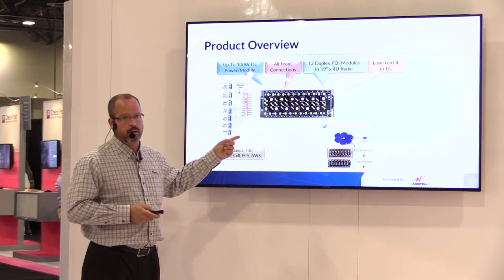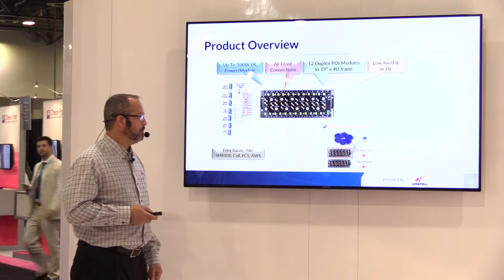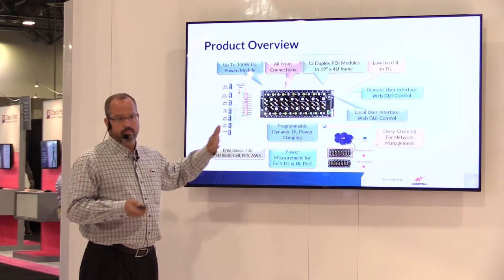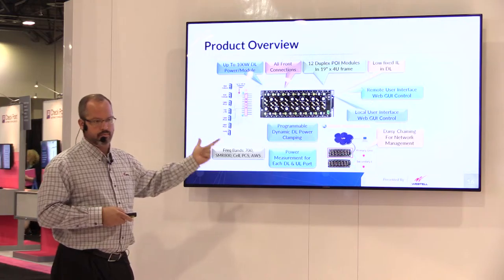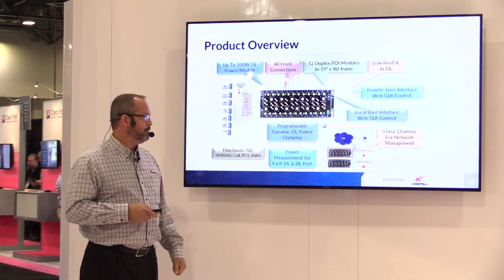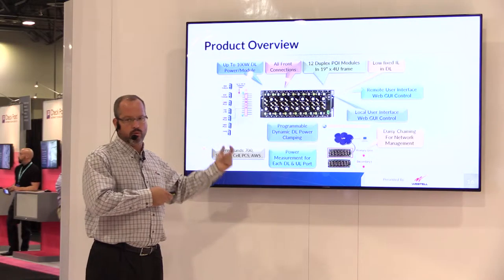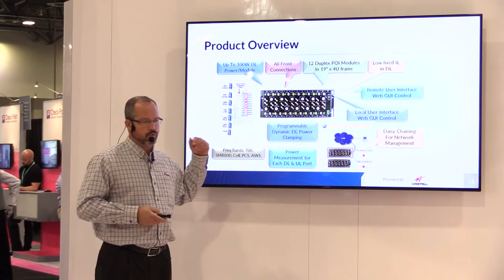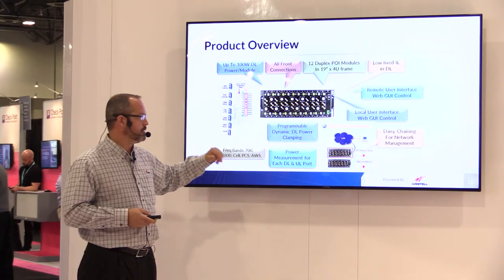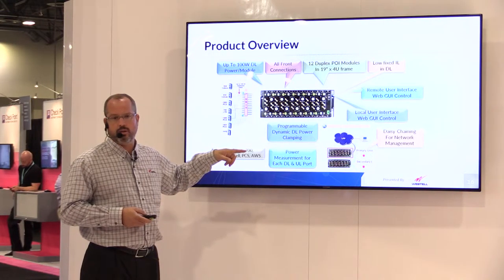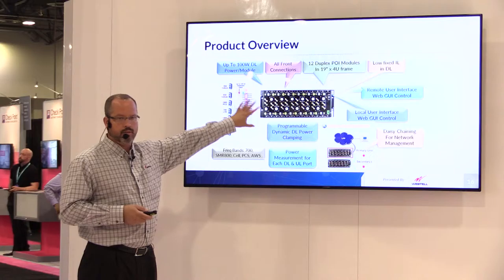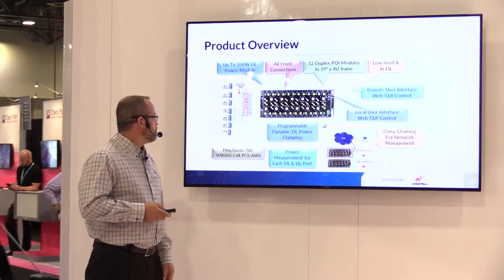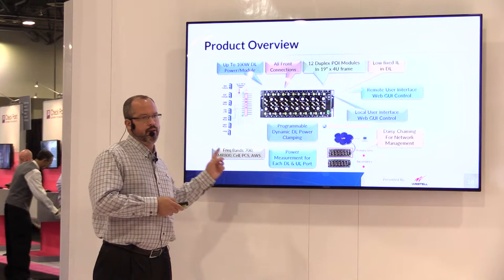The remote user interface allows everything to be monitored independently — alarms, it works via SNMP, you can use a direct connect, and you can log in locally or remotely through any type of gateway modem. We give you power measurements for uplink and downlink on every single point of interface. You can daisy-chain the unit and also independently assign IP addresses so you can use port forwarding with a router or switch. We support every currently deployed band, and WCS is right around the corner.